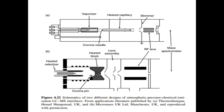Figure 4.22 shows schematics of two different designs of atmospheric pressure chemical ionization LC-MS interfaces, from application literature published by Thermo Finnigan and Micromass UK Ltd., Manchester UK, reproduced with permission. The labeled components include: heated nebulizer, corona pin, heated block, lens assembly, mass spectrometer, skimmer, heated capillary, corona needle, and vaporizer. Design A and design B are shown.